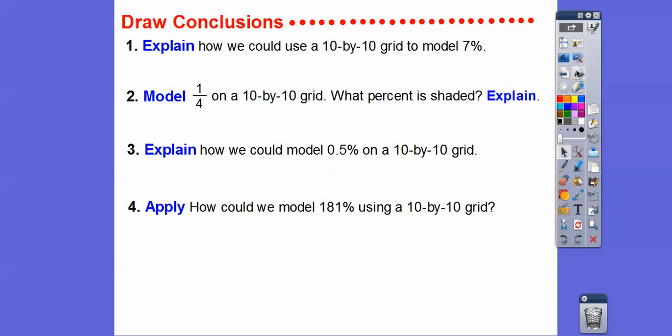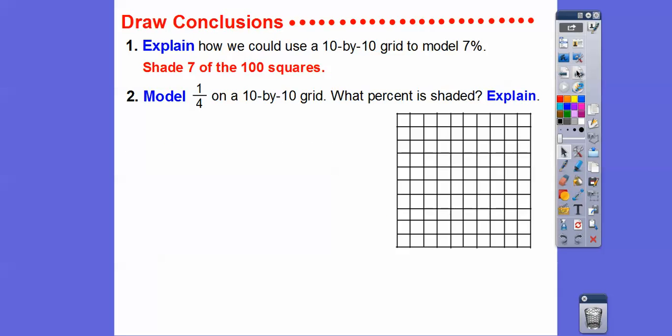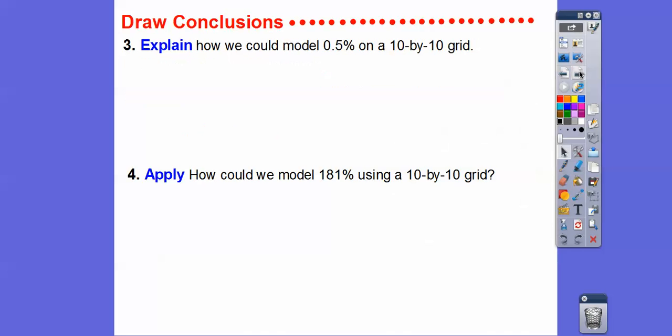Let's answer some questions here. Explain how we can use a 10 by 10 grid to model 7%. Well, that's easy. We just shade seven of the 100 squares on the 10 by 10. Model 1 fourth on a 10 by 10 grid and what percent is shaded? Remember 1 fourth is the same as 25 hundredths, because 25 times 4 equals 100. So 1 fourth is the same as 25 hundredths. You guys probably knew or some of you knew that 1 fourth is the same as 25%. So let's shade 10, 20, and then five of these guys right there. So there's 25% right there.